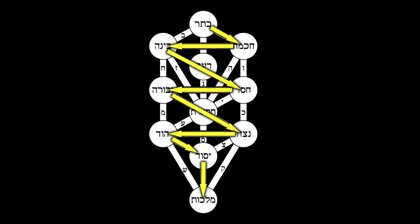Malkut is Shekhinah, the queen of heaven, and the bride of Yahweh. The emanations descend in the form of a lightning bolt, just as Lucifer descended from heaven like a lightning bolt.